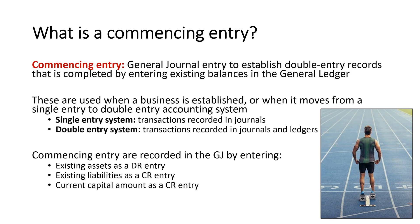A commencing entry is recorded in the general journal by entering assets as a debit entry, liabilities as a credit entry, and the current capital amount as a credit entry.